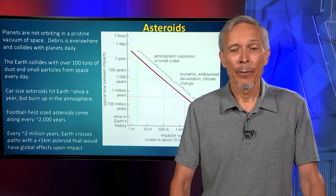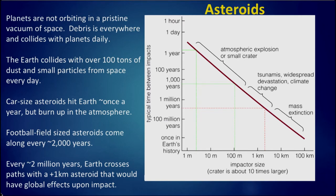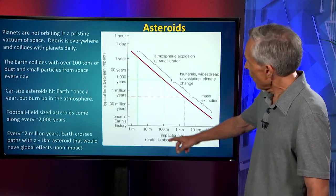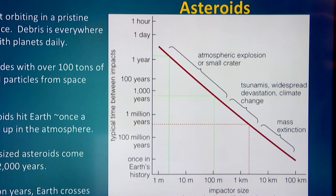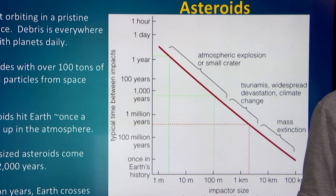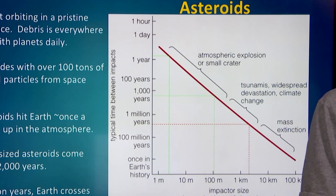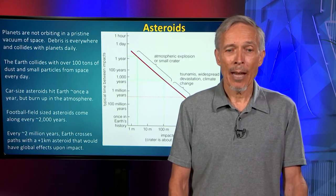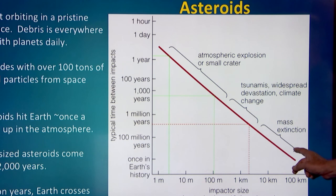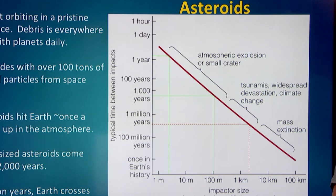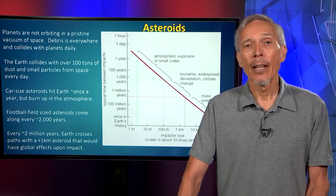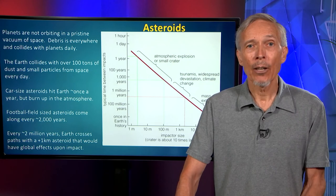A car-sized asteroid will hit the Earth about once a year, but most burn up in the atmosphere. An asteroid the size of a football field — about 100 meters — will come along every 2,000 years. This graph shows the typical time between impacts as a function of the size of the impactor. Basically there's a logarithmic distribution of debris in space: many more small pieces than large pieces, so small debris hits much more frequently but does correspondingly less damage. Scaling up to the high end, every few million years the Earth will cross paths with an asteroid perhaps hundreds of meters across that would have global effects upon impact, and such incidents can cause a mass extinction.